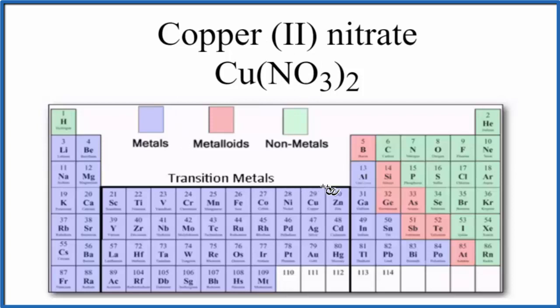So we find copper on the periodic table, that's a metal, and then we have nitrogen and oxygen. So we have a metal and then two different nonmetals. Metal plus nonmetals, that's almost always going to be an ionic compound.